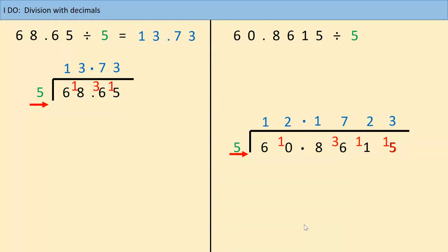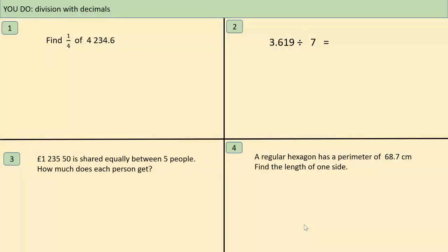This is basically the same as what you were doing yesterday, so we're going to go straight in to a 'you do'. There are only four questions — I would like you to have a go on paper. Again, we have exactly the same type of questions as before, but this time we are starting with a decimal number. I have just noticed that the decimal point in question three doesn't appear to have printed. The amount in question three is £1,235.50 — 1235 pounds and 50 pence. Please remember that when you are doing that question. Pause the video, show your working, remember units in your answer, and press play when you are ready.